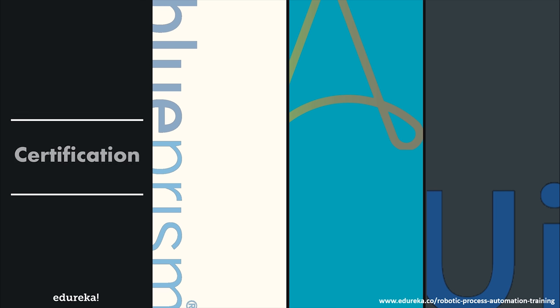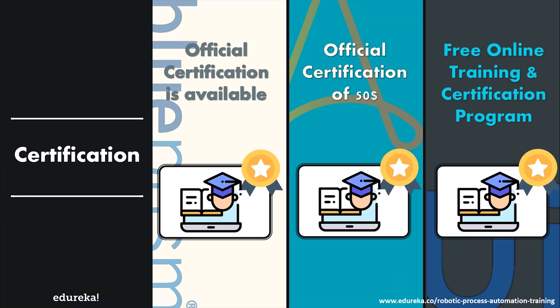The last factor of comparison is certification. Being a skilled certified professional makes you stand out in the crowd, whether certified in a single tool or multiple tools. Blue Prism offers official certification, and so does Automation Anywhere, whose certification costs around $50. UI Path offers both free online training and certification programs. Edureka also offers a training program to make you a certified professional in UI Path.